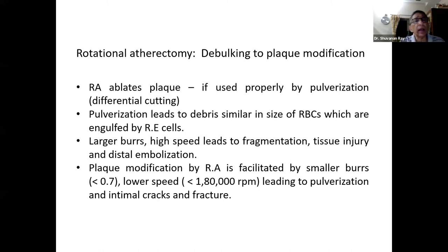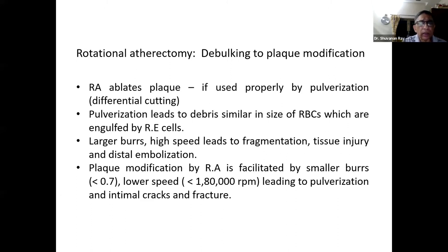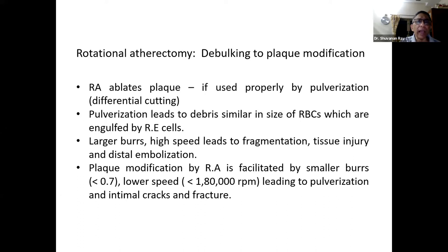When David Auth discovered the rotational atherectomy system, it was initially used for debulking — removal of plaque material — but it showed so much restenosis that it went into oblivion. Then came the plaque modification technique. Without ablating the plaque, if rota is used properly by pulverization, its differential cutting mechanism pulverizes the plaque, producing debris similar in size to RBCs, which are collected by the reticuloendothelial cells.